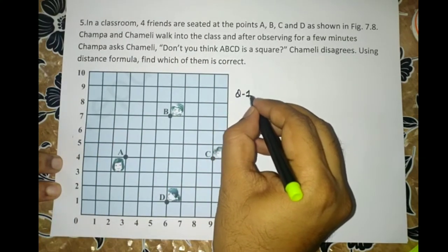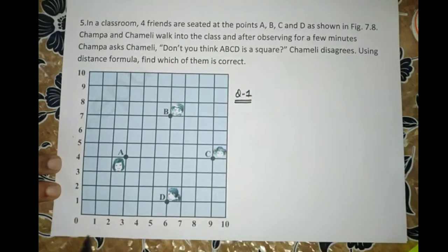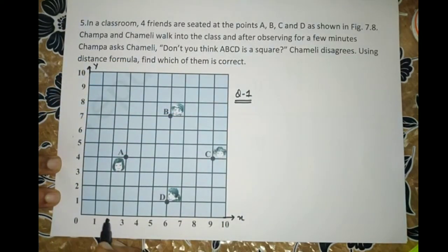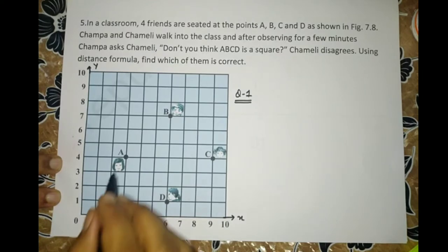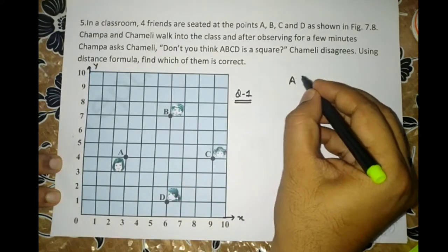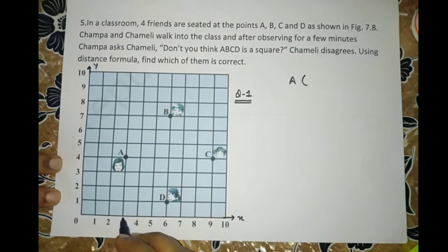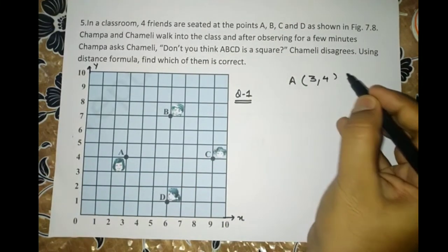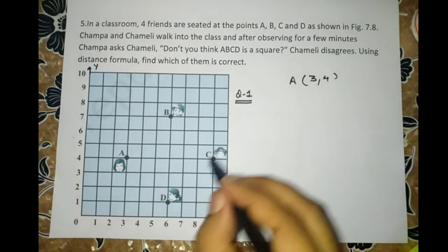Now children, let us assume this classroom as the quadrant 1 of a Cartesian plane, where both x and y are positive. Now if I use this system, what will be the coordinates of A? It will be 3, 4.